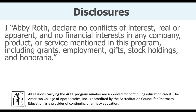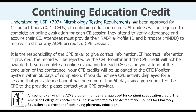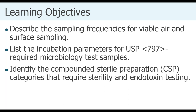The disclosures indicate nothing to declare regarding conflicts of interest. Continuing education credit information is available for those seeking CE. The learning objectives are: first, you should be able to describe the sampling frequencies for viable air and surface sampling; and second, you should be able to list the incubation parameters for USP 797 required microbiology test samples—covering viable air and surface, sterility, and endotoxin testing. You will also be able to identify the compounded sterile preparation categories that require those particular tests.